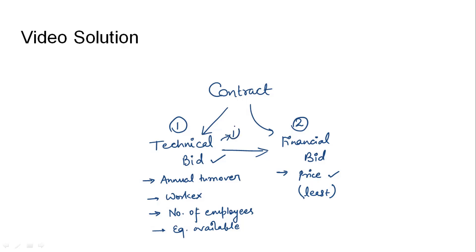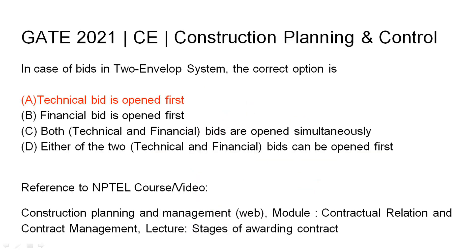So the order of opening bids is: firstly the technical bid is opened and secondly the financial bid. Therefore, in case of bids in a two envelope system, the correct option is that the technical bid is opened first. The relevant NPTEL reference has been provided.